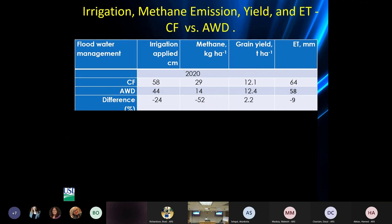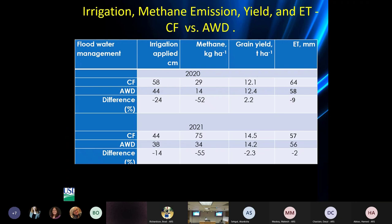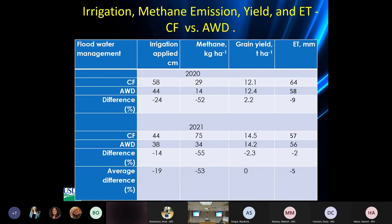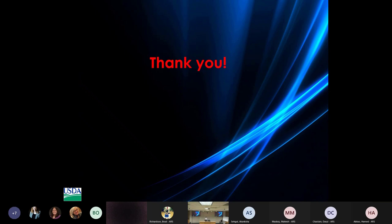To conclude, irrigation applied in control flood was 58 centimeters, AWD was 44, so 24 percent saving. Methane, 52 percent saving. And grain yield, 2.2 percent gain actually. Evapotranspiration, 9 percent saving. In 2021, similar pattern, slightly different. But methane emission is more or less the same - minus 52 and minus 55. So average, 19 percent saving in applied irrigation. ET hardly a difference, minus five. That's the summary.